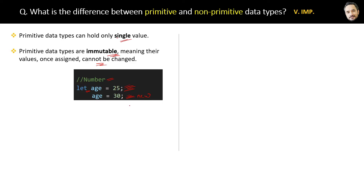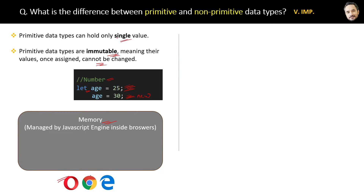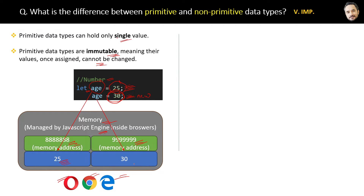What actually happens is — this is the memory managed by the JavaScript engine inside the browser. When a new `age` variable is created for the first time, a new memory location is occupied by this variable and the value is stored at that memory address. But when the variable value is updated to, say, 30, a new memory is assigned with a new address, and now the variable `age` is assigned to this new memory address with the new value.